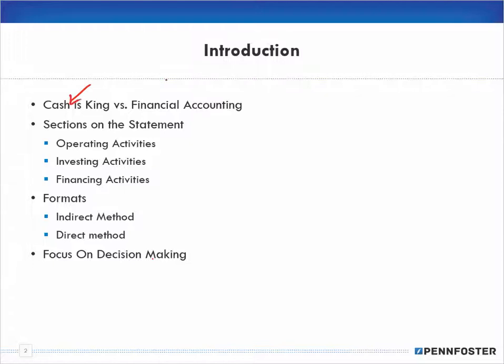In the first video we talked about cash versus accrual accounting, and how we have to take our accrual accounting and look at the different accounts and make adjustments to bring us back to our cash position. In business, cash is king — if you don't have enough cash to pay your bills, it doesn't matter how great your financial statements look. Certain ratios can look stellar but others can show you're in real trouble.